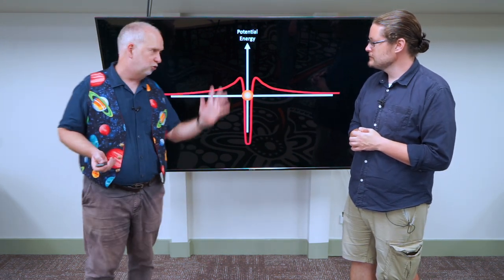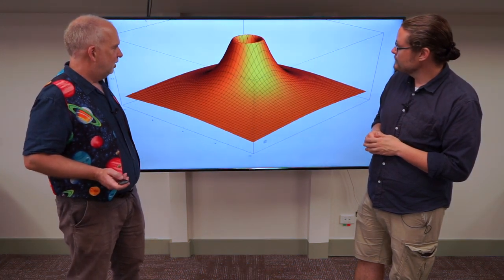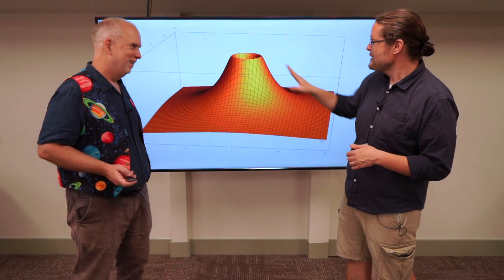And just imagine if you had this as a surface. Of course, it's a three-dimensional potential curve. Let's show it in two dimensions. Just imagine trying to play golf when the holes look like this. It kind of looks more like putt-putt where you have to get it over, but if you hit it too hard, it's going to sail right over.